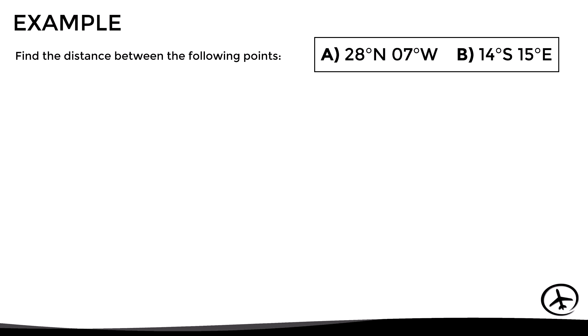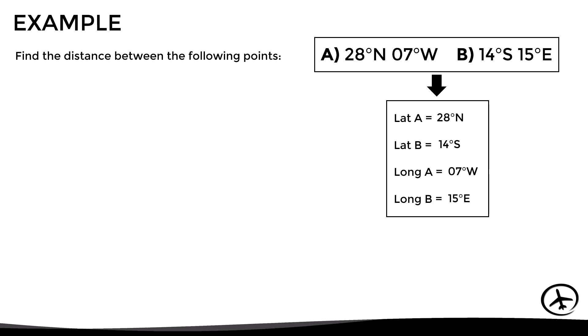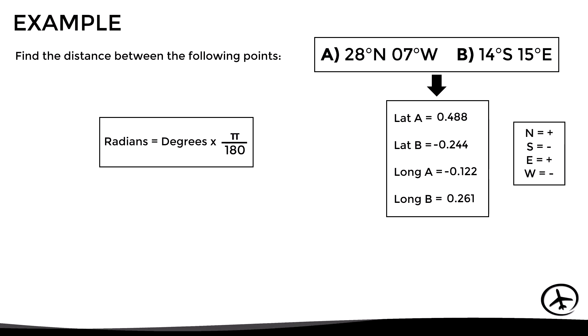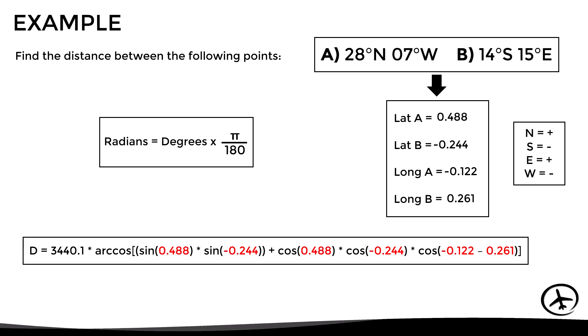Let's see an example of how to use it. Suppose we want to determine the distance between these points — here we have the corresponding latitudes and longitudes. In order to convert them to radians it is necessary to change the sign according to the hemisphere: the northern and eastern hemispheres are positive, while the southern and western are negative. After doing this, we can convert them to radians using this formula. Once this is done, we replace them in the Haversine formula and do the math, obtaining as a result a distance of 2827.7 nautical miles.